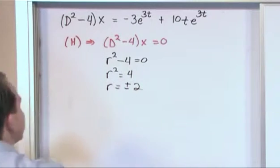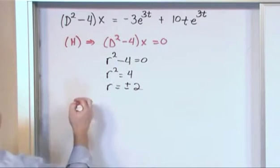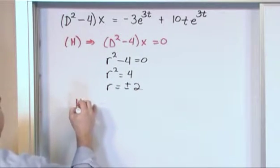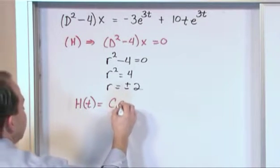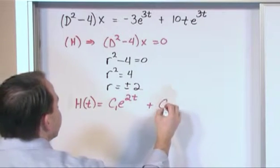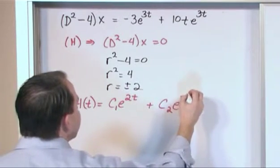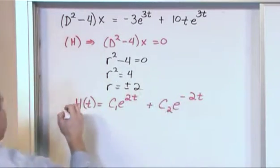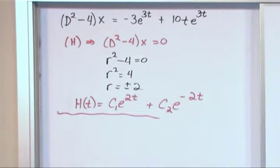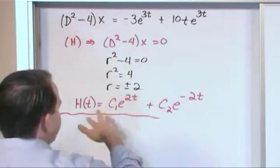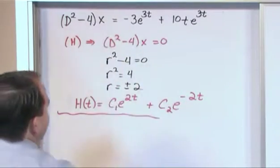So because of that, we can write the solution to this related homogeneous equation down right away. This is very simple, h of t is equal to c1e to the 2t plus c2e to the minus 2t. And you might want to circle that in your paper or something like that to keep it handy. So c1e to the 2t plus c2e to the minus 2t. So you see it's very simple to get to this point. I mean, this is the solution to the related homogeneous version.